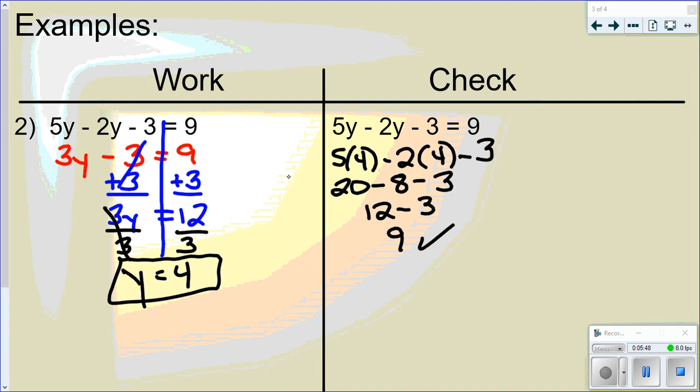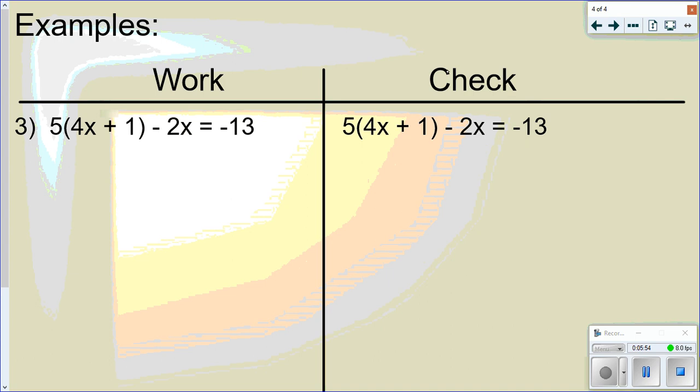Again, if I'm going too fast, just pause it, back it up, and watch it again. All right, so let's look at one more. All right, so this one has distributive property and combining like terms. So the first step is to do the distributive property. So that's right here.